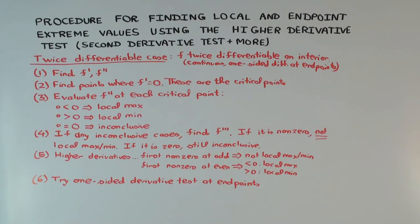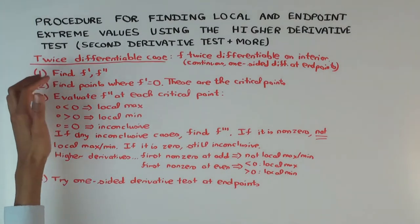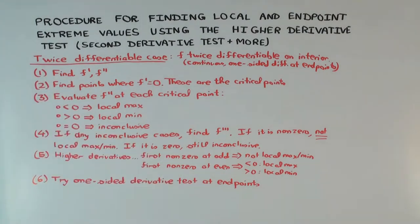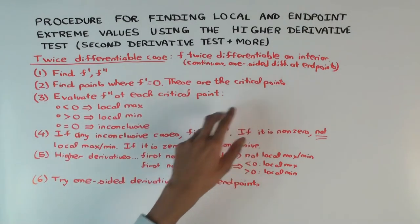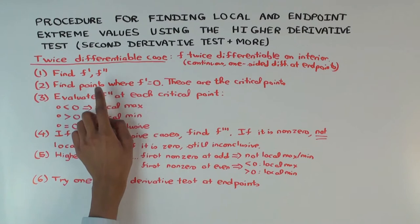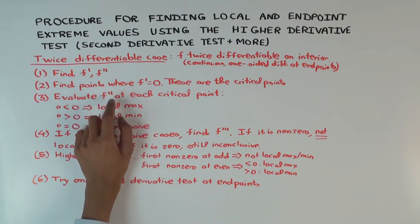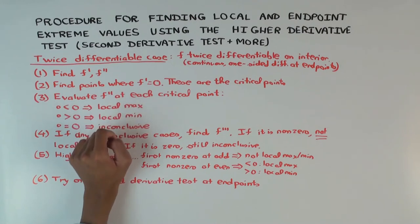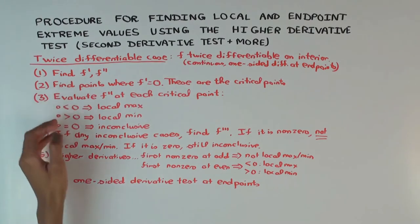Contrasting with the first derivative test — the first derivative test is pretty much similar up to this point, but now is where we diverge from it. Once you've found the critical points, you evaluate f'' — the expression you calculated — at each critical point. These cases are basically a statement of the second derivative test.